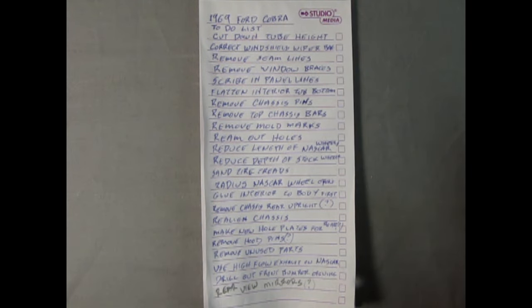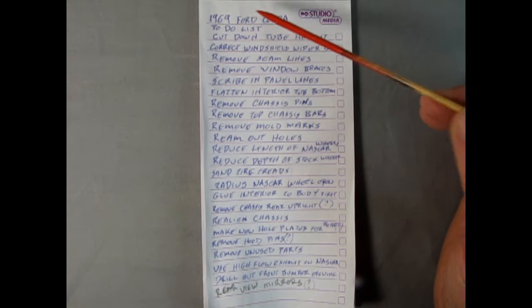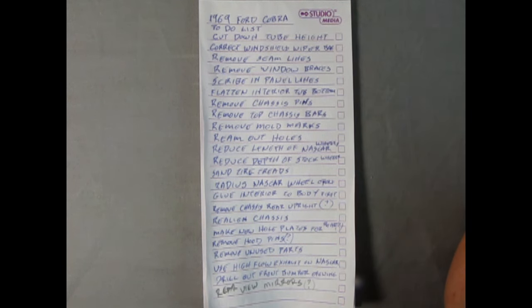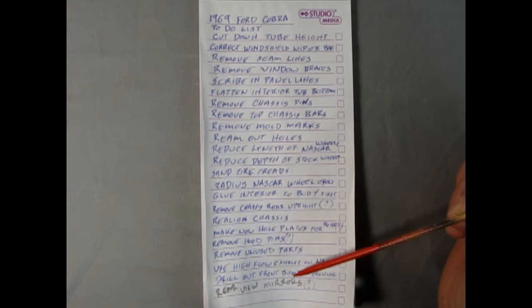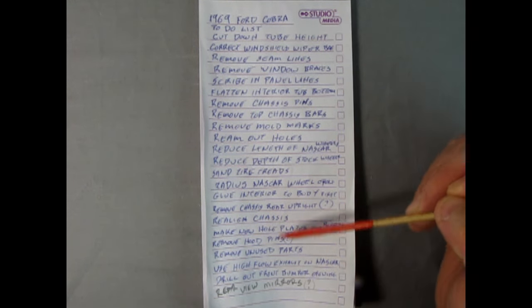After looking at all the parts and taking in everybody's suggestions and watching YouTube videos and doing my own research, I've come up with this shopping list of things to do for the 1969 Ford Cobra. This is my to-do list. So in no particular order, I have all these things and they end up being 23 things you could do to this kit.